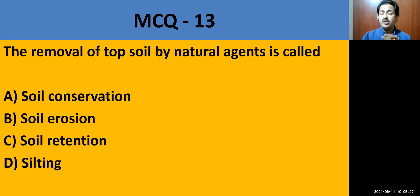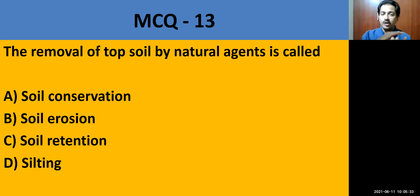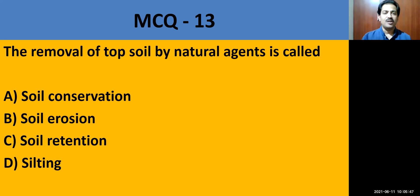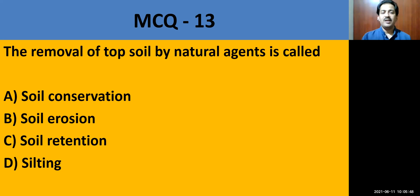MCQ question number 13: The removal of top soil by natural agents is called — soil conservation, soil erosion, soil retention, or silting. The correct answer is soil erosion. The removal of the top layer of soil is called soil erosion.